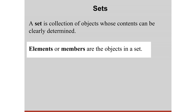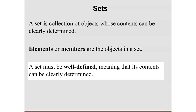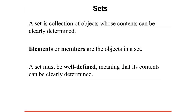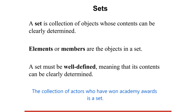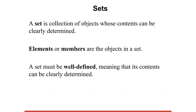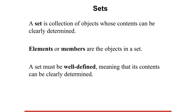A set is a collection of objects whose contents can be clearly determined. The objects in a set are called elements or members of the set. A set must be well-defined, meaning its contents can be clearly determined. Using this criterion, the collection of actors who have won Academy Awards is a set — we can always determine whether or not a particular actor is an element of this collection. By contrast, consider the collection of great actors; whether or not a person belongs to this collection is a matter of how we interpret the word 'great.'